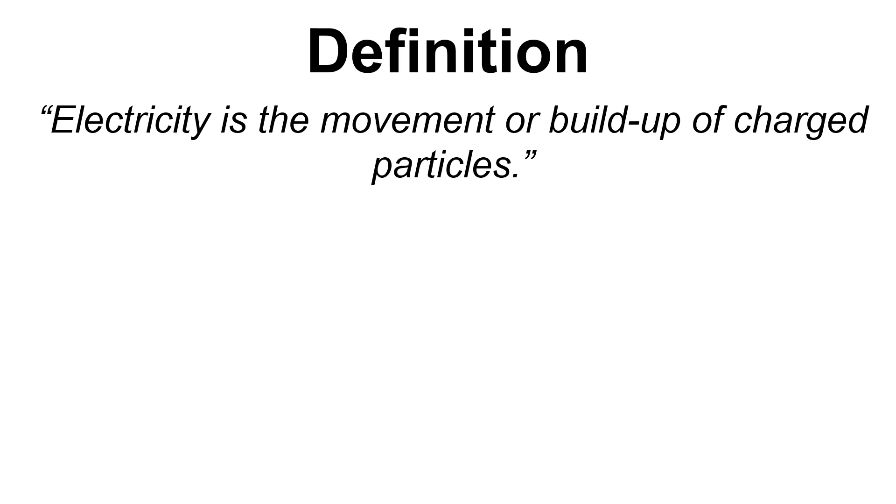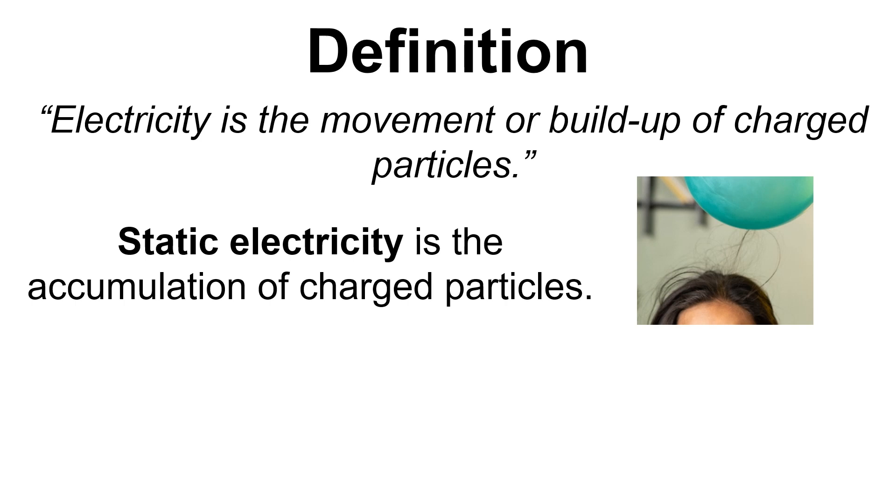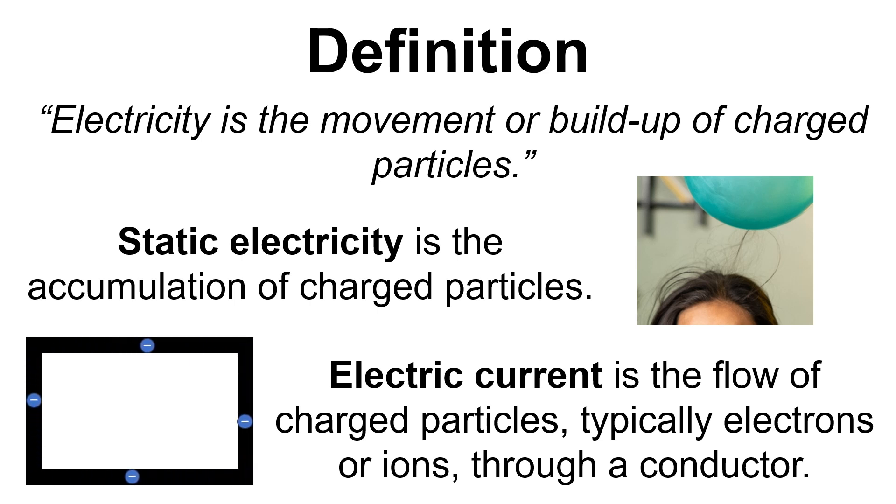So electricity is the movement or build-up of charged particles. Static electricity is the accumulation of charged particles, whereas electric current is the flow of charged particles, typically electrons or ions, through a conductor.